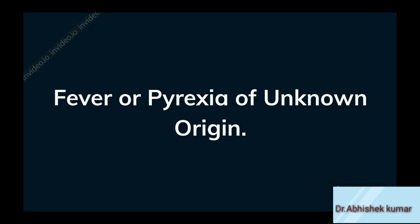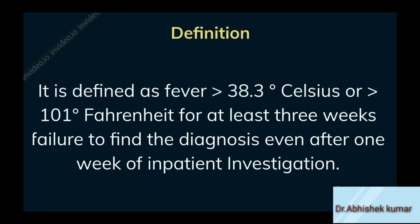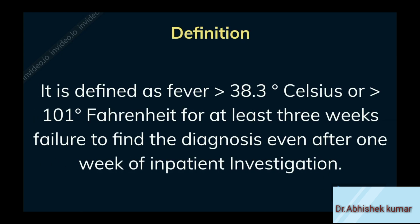This is asked as a long answer question in many university exams. Fever of unknown origin — definition: it is defined as fever 38.3 degrees Celsius or 101 degrees Fahrenheit for at least 3 weeks, with failure to find the diagnosis even after 1 week of inpatient investigation.